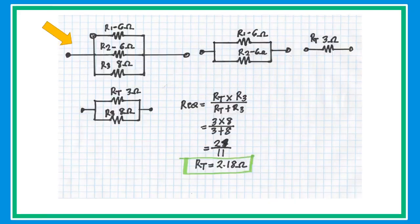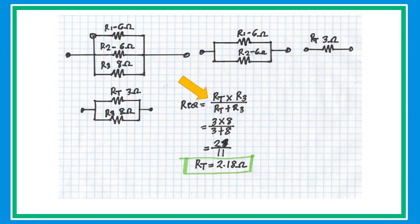In this problem, since R1 and R2 have the same value of 6 ohms, just get half of the value. Then redraw the circuit. For the remaining two resistors in parallel, use the product-over-sum formula and substitute the values to get the equivalent resistance of 2.18 ohms.